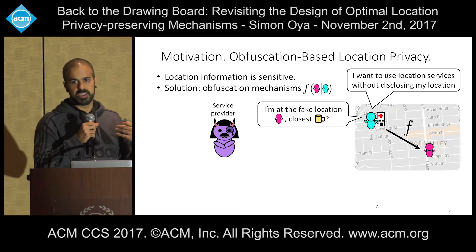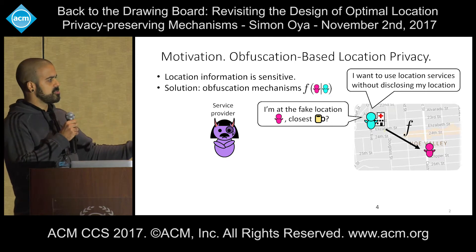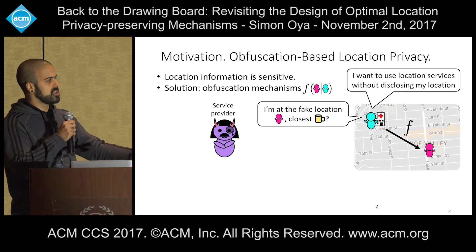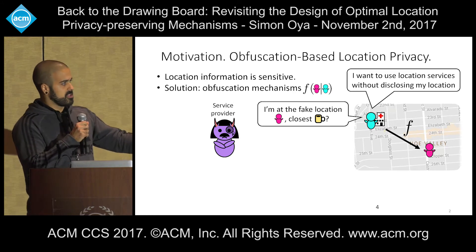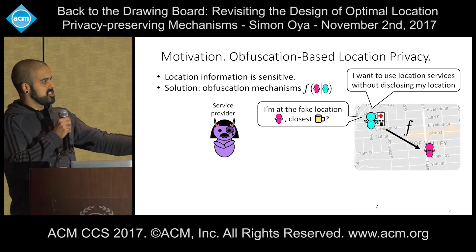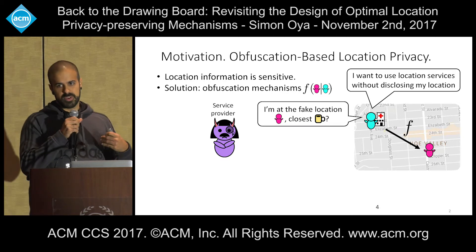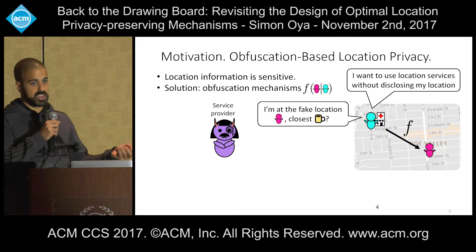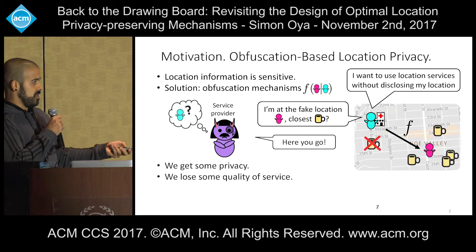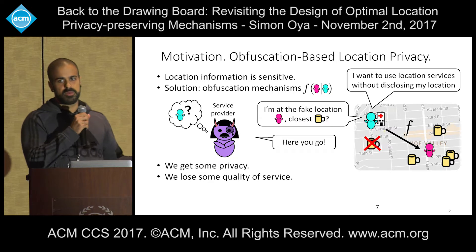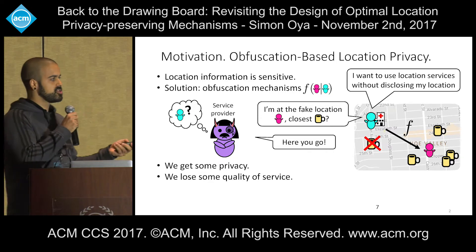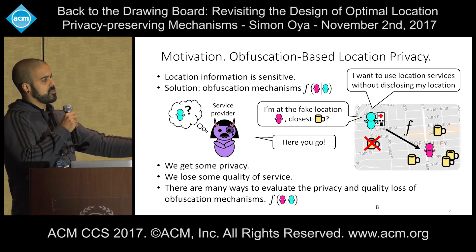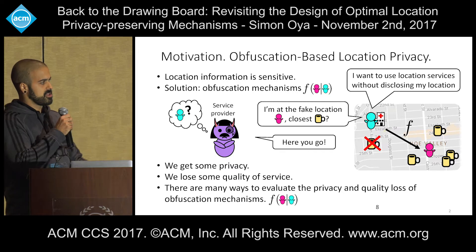What she can do — what we consider here as a defense — are obfuscation mechanisms. You can think of this as a randomizing function that generates a fake location close to your real location randomly. By generating this fake location, she can query the service at the fake location for the closest restaurants or bars. The service provider replies with the closest bars to the obfuscated location, and this way we get some privacy because the service provider doesn't know exactly where the real location is, but we lose some quality of service because the results are based on the obfuscated location, not the real one.